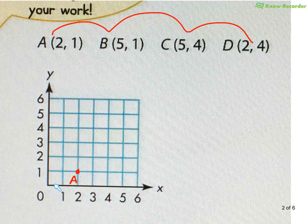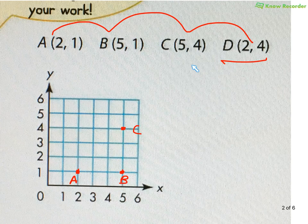B is (5, 1). Go to the right 5 from the origin, up 1. Next, (5, 4) — go to the right 5 and up 4. Right now I have 3 points, so it would be a triangle, but I have a 4th over here — some kind of quadrilateral, I wonder what it could be. So here I'm going right 2, up 4. That's point D.